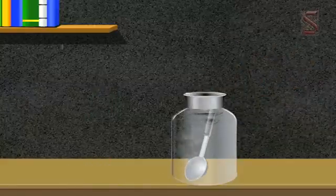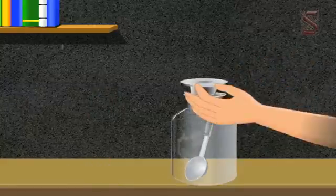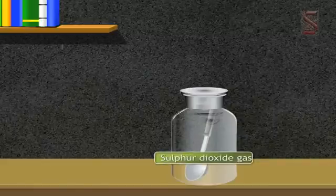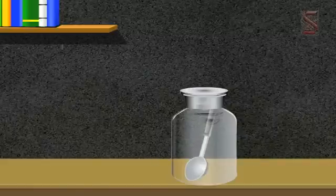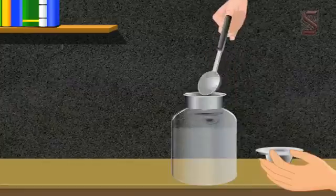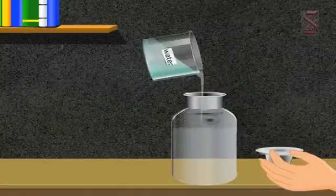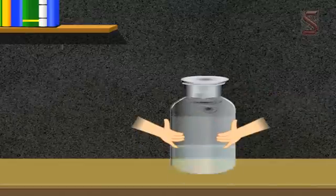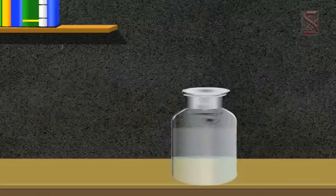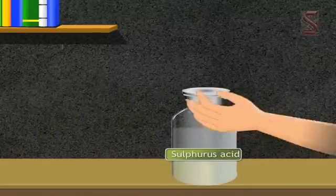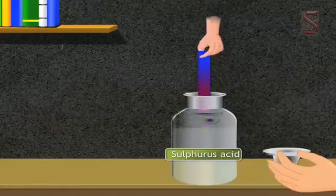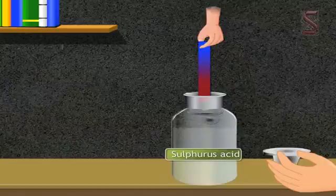As soon as the sulfur starts burning, introduce the spoon into a gas jar, then cover the jar with a lid to ensure that the produced sulfur dioxide gas does not escape. Remove the spoon after some time. Add a small quantity of water into the gas jar and quickly replace the lid. Shake the gas jar well. Sulfurous acid is formed. Now introduce a blue litmus paper, which turns red. The sulfurous acid turns the blue litmus to red.